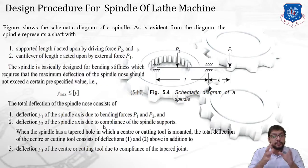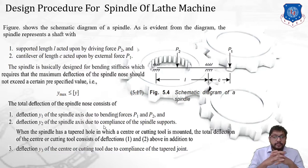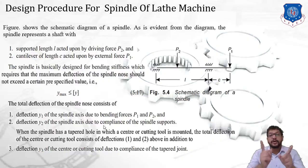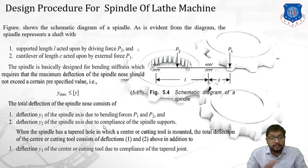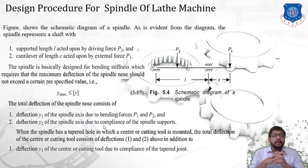The total displacement of the spindle nose consists of the following: first, deflection y1 of the spindle axis due to bending forces P1 and P2; second, deflection y2 of the spindle axis due to compliance of the spindle support — since compliance is the inverse of stiffness. When the spindle has a tapered hole in which a center or cutting tool is mounted, the total deflection also includes a third component: deflection y3 of the center or cutting tool due to compliance of the tapered joint. So the three deflections y1, y2, and y3 make up the total deflection of the spindle nose.